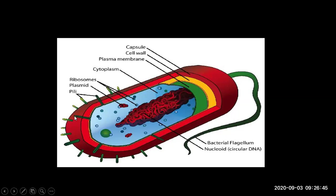There is also a structure called pili, and another locomotory structure called flagellum. If it flips to the right and left, the bacteria can move, but not every bacterium has a flagellum. Pili is another structure, while flagellum is the long single whip-like structure used for locomotion.